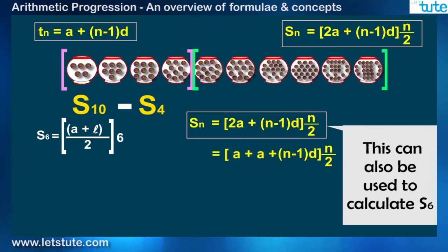This formula is derived by the original formula only, which you can watch in our previous sessions. Like, if I consider my Tn as the last term of the sequence, A plus L multiplied by n by 2, which is nothing but the average of the first and last term into the number of terms.